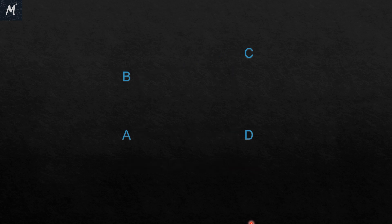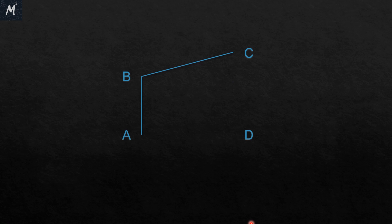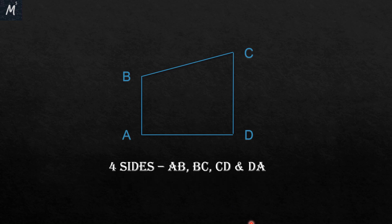The next thing is the sides of a quadrilateral. A side of a quadrilateral is defined as the line segment joining two adjacent vertices. So when we join A and B, we get the first side. When we join B and C, we get the second side. When C and D is joined, we get the third side. And the last side is D-A. Hence, the four sides are AB, BC, CD, and DA.